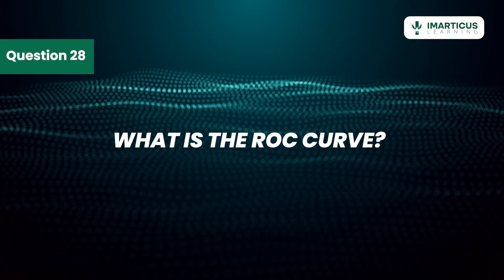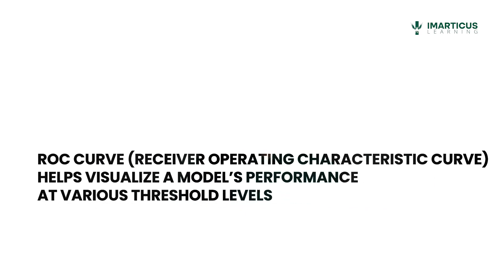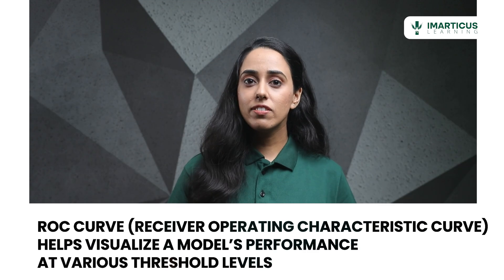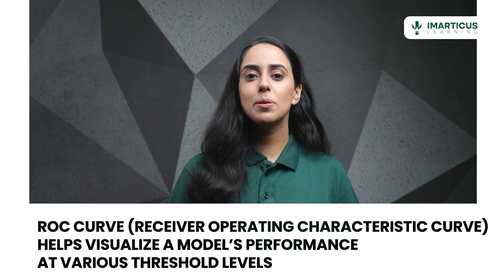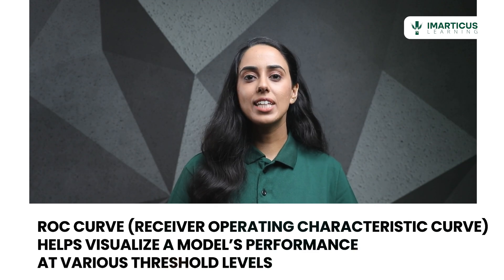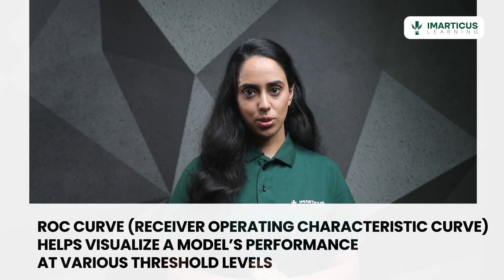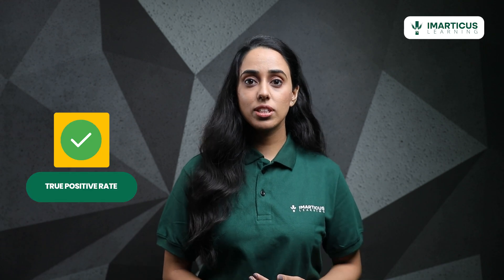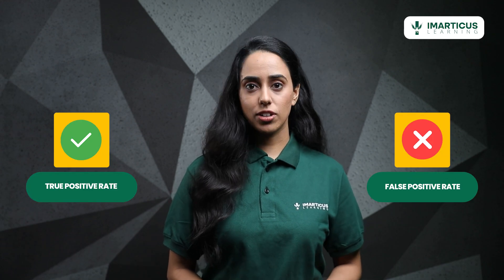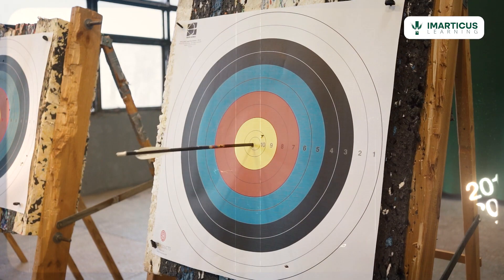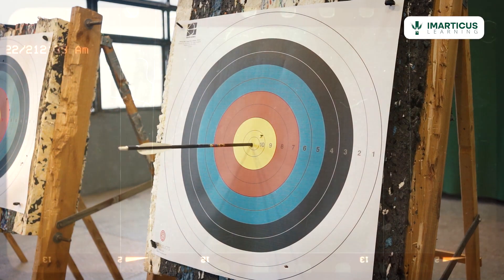What is the ROC curve? The ROC curve, or receiver operating characteristic curve, helps visualize a model's performance at various threshold levels. It plots the true positive rate against the false positive rate. The closer the curve is to the top left corner, the better the model performs — it's like aiming for the bullseye in archery.